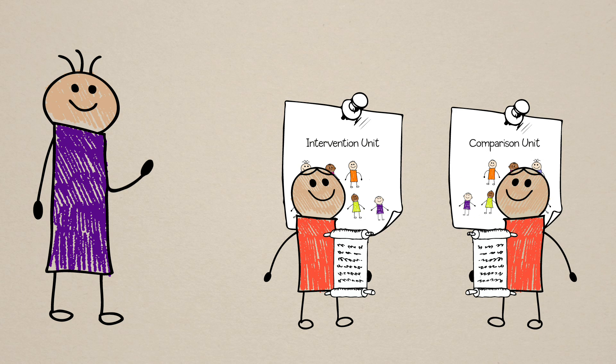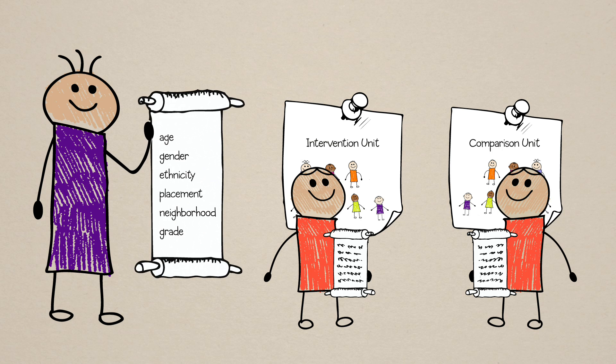Matching occurs using a variety of previously selected demographic and case-related variables such as gender, age, maltreatment type, and placement history that are relevant to the intervention we're testing.